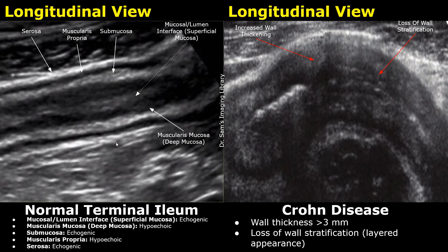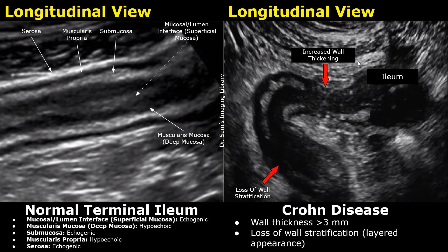Here is another case of Crohn's disease. We can see a thickened wall and there is loss of wall stratification — we do not see the layered appearance of the bowel wall. In this image, you can see increased wall thickening along with loss of wall stratification, and also prominent hyperechoic creeping fat surrounding the bowel loop.